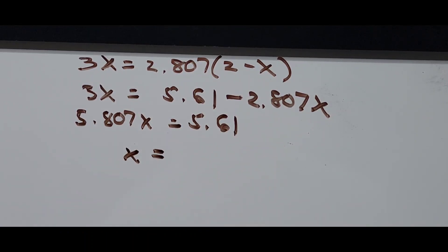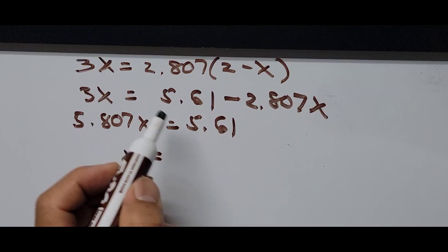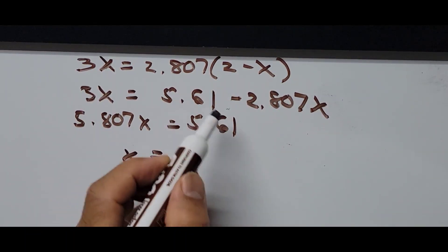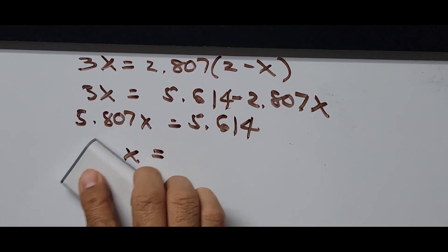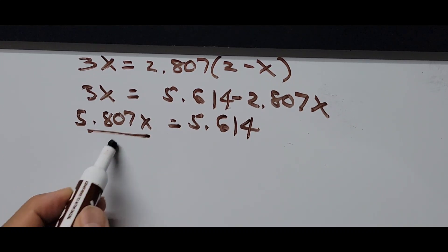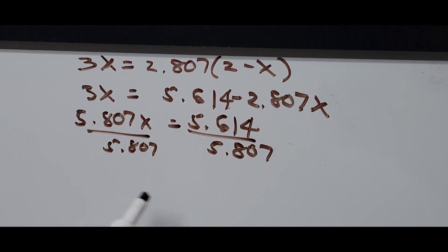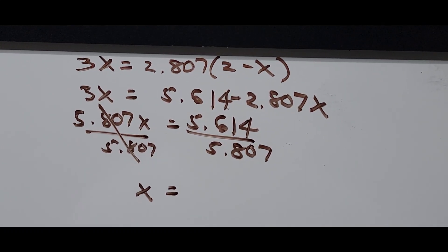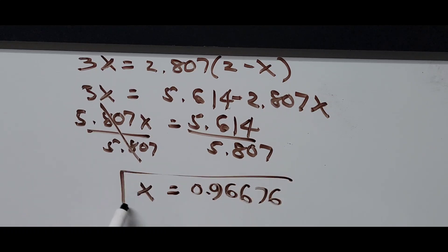Solving, x equals 5.614 divided by 5.807, which gives x approximately equal to 0.96676. That's the approximate answer for Method 2.